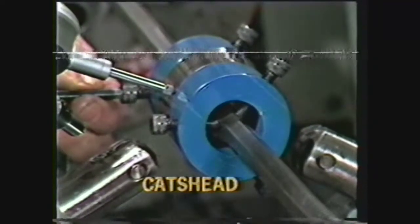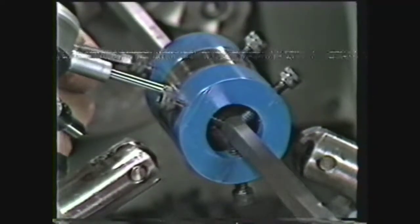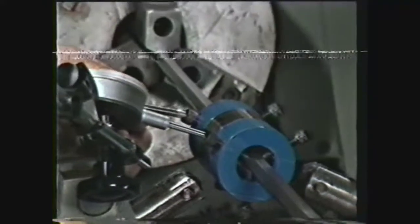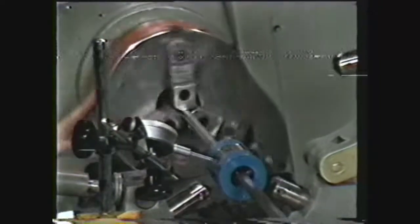The adjusting screws of the cat's head are adapted to the irregular or small piece. Using a dial indicator on the bearing surface, you can true the cat's head by rotating the work by hand and adjusting the screws.